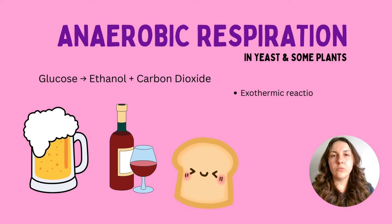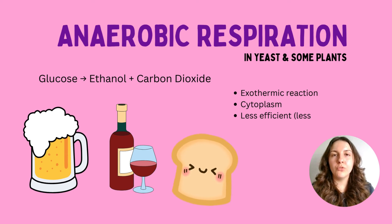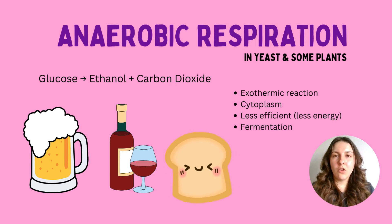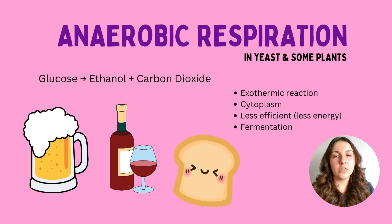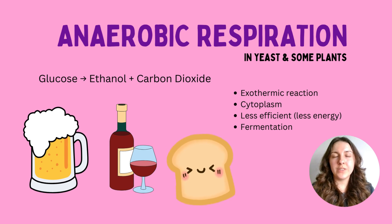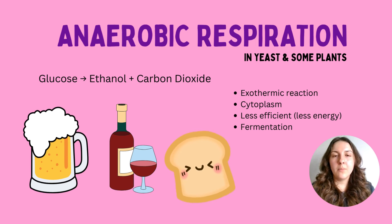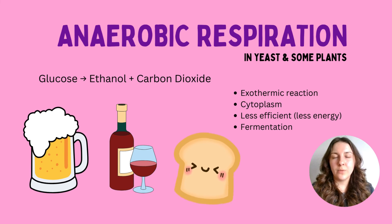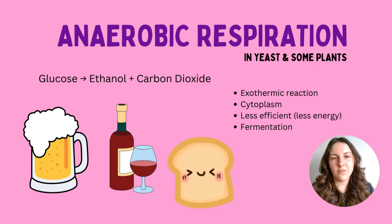Anaerobic respiration also occurs in yeast and some plants — a process often called fermentation. We can utilise this in industry to produce alcohols like beer and wine, and in the manufacture of bread. Yeast breaks down glucose anaerobically to produce ethanol — an alcohol — and carbon dioxide. The ethanol is used to brew beer and wine, while the carbon dioxide gives bread its bubbly, aerated texture. This is still an exothermic reaction and occurs in the cytoplasm of yeast and some plants.